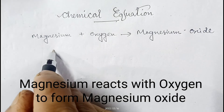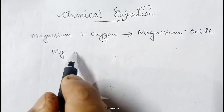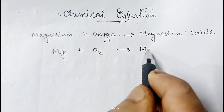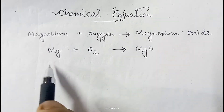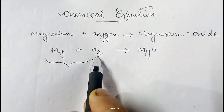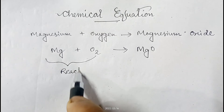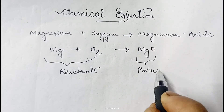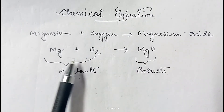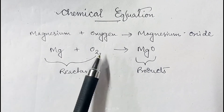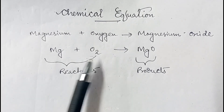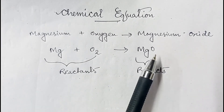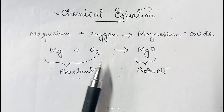If we write this in terms of symbols and formulae, it will be: Mg reacts with O₂ to form MgO. In this reaction, the part on the left — magnesium and oxygen — is called the reactants, and the new substance or substances formed on the right are called products.